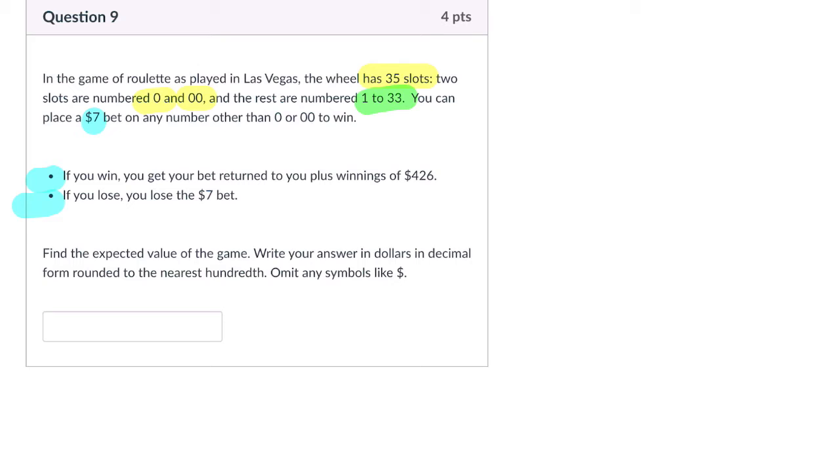Find the expected value of the game. So you have this wheel with 35 spots. You have to place a bet on somewhere between 1 and 33, but the idea is that only one of those spots wins. There's one winning spot out of 33 numbers and 0 and 00, out of 35 spots.